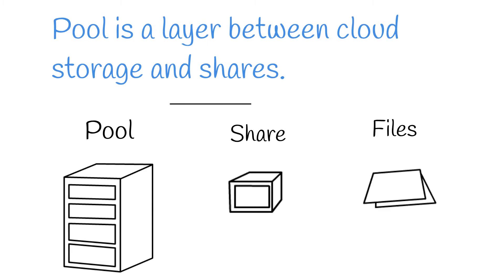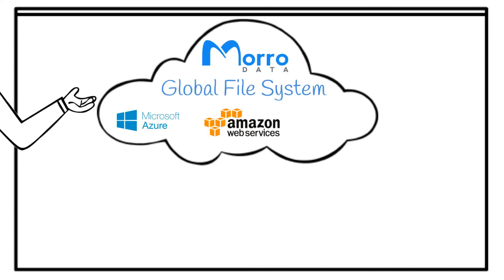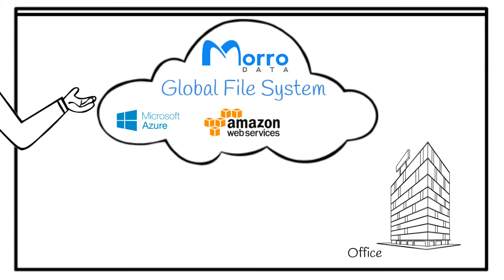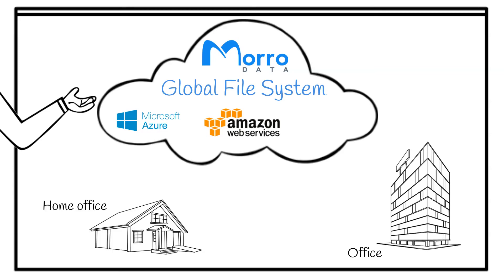The files of all the shares are deduplicated, so that duplicate files will not take up duplicate space. With the Morro global file system, all your files are stored in a single cloud namespace. This means you never need to remember which file server or NAS in which office has the files you want.